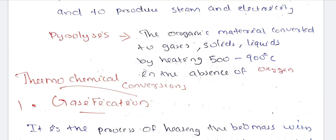Pyrolysis: the organic material is converted to gaseous, solid, and liquid products by heating at 500 to 900 degrees Celsius in the absence of oxygen. That oxygen doesn't matter — we reduce it to 500 to 900 degrees Celsius. We use pyrolysis.